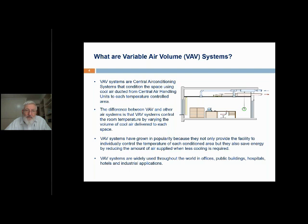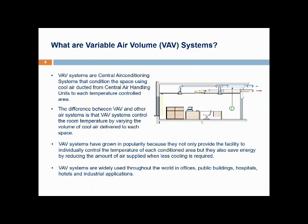VAV systems are central air conditioning systems. They condition the space using cool air conducted from central air handling units to each temperature controlled area. It's an all-air system supplying air to each space to be conditioned. The difference between VAV and other all-air systems is that VAV systems control the room temperature by varying the volume of air delivered to each space.